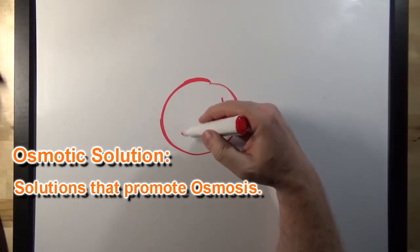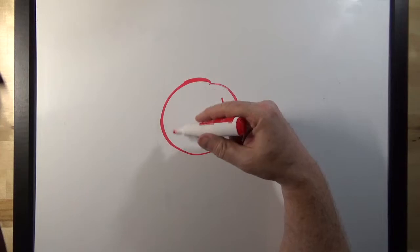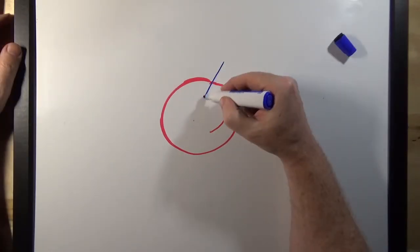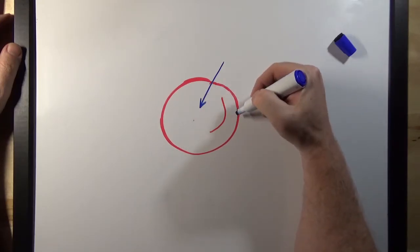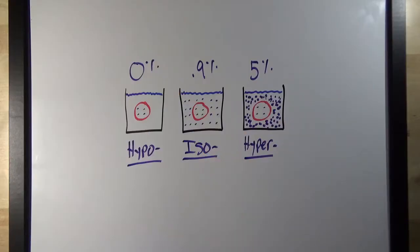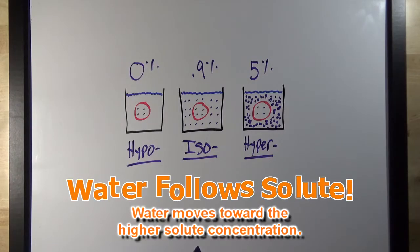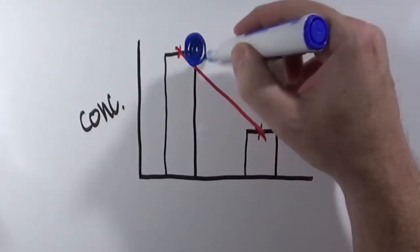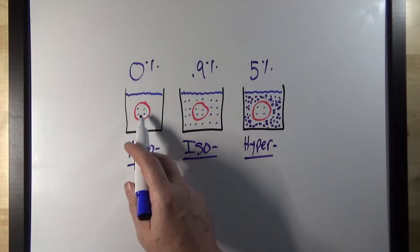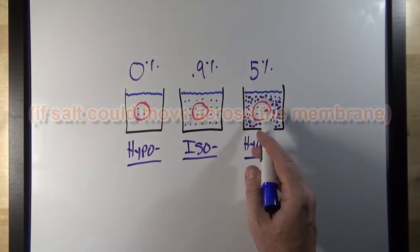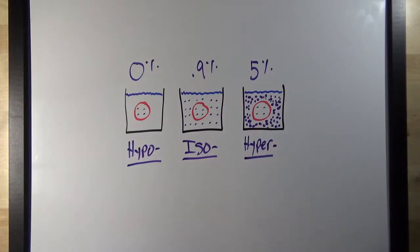Osmotic solutions are solutions that promote osmosis, and different osmotic solutions will affect the cell differently. If the osmotic solution causes water to exit the cell, the cell membrane will get looser and the cell will shrink. If the solution causes water to enter the cell, the cell will get bigger and bigger, and the cell membrane will get tighter as the cell expands. One thing that's always true: water follows solute — water is going to move toward the higher solute concentration. Normally, substances diffuse from higher to lower concentration, so we would expect the salt to diffuse out of the cell in the hypotonic case, no diffusion in the isotonic case, and salt to move into the cell in the hypertonic case.